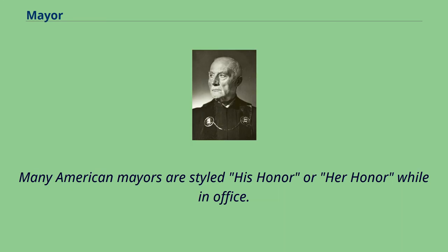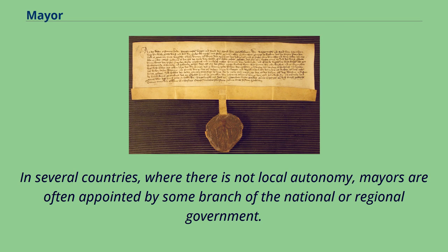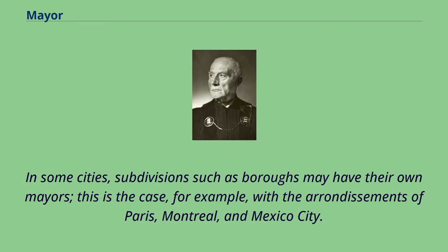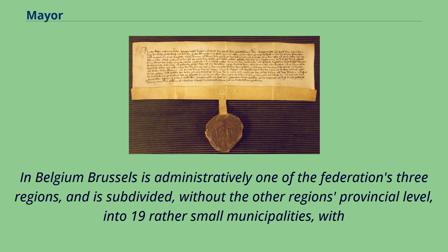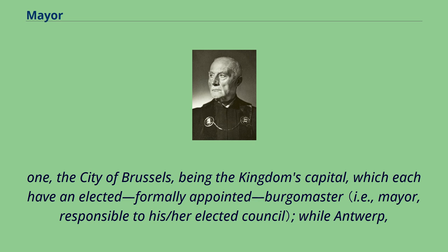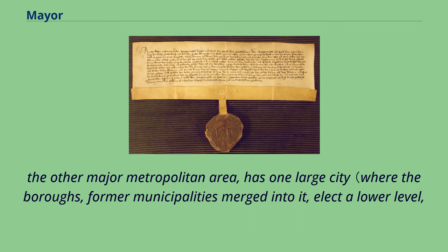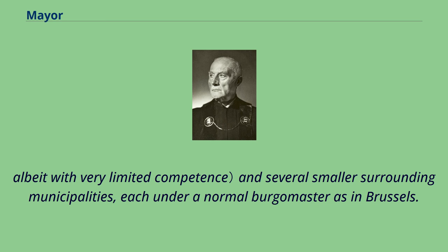Many American mayors are styled 'His Honor' or 'Her Honor' while in office. In several countries where there is not local autonomy, mayors are often appointed by some branch of the national or regional government. In some cities, subdivisions such as boroughs may have their own mayors, as is the case with the arrondissements of Paris, Montreal, and Mexico City. In Belgium, Brussels is administratively one of the federation's three regions and is subdivided into 19 rather small municipalities, with one — the city of Brussels — being the kingdom's capital, each having an elected, formally appointed burgomaster. Antwerp, the other major metropolitan area, has one large city where the boroughs elect a lower level with very limited competence, and several smaller surrounding municipalities each under a normal burgomaster.